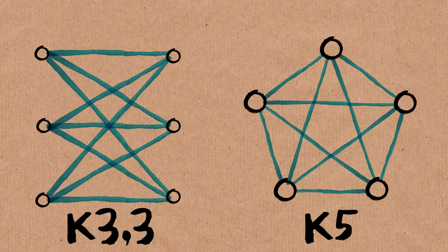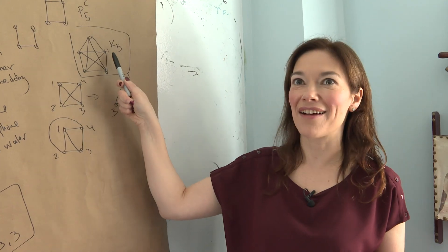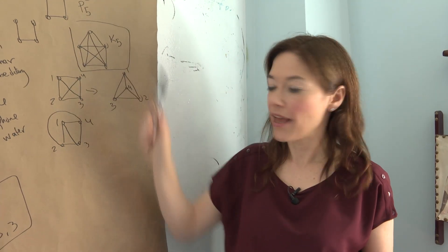K somewhat mystifyingly stands for complete. And so this is the complete graph on five vertices.